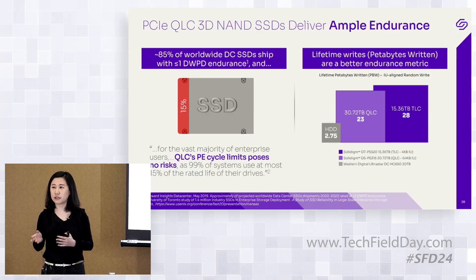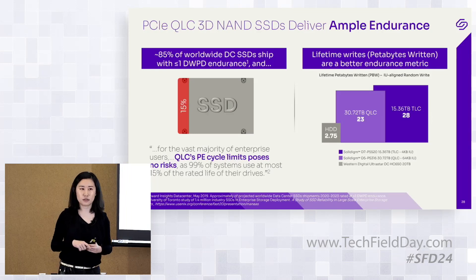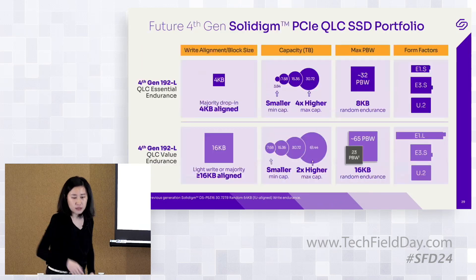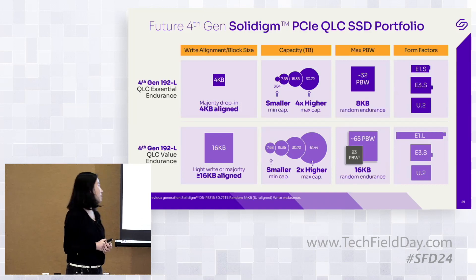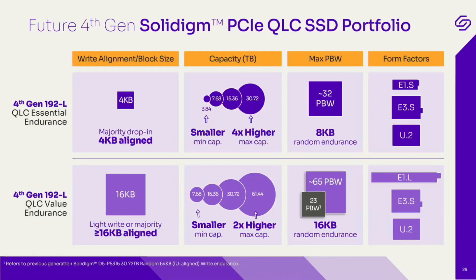More and more applications will be able to convert to 0.5 DLPD with high-density QLC SSD. Now let's move on to the QLC SSD portfolio. We are announcing this fourth-generation 192-layer QLC portfolio. On the top is the Essential Endurance, which is 4K indirection — a drop-in replacement for any storage solution you have today. The second is the Value Endurance, which is 16K write-optimized and used for write-intensive and ultimate cost-saving scenarios.